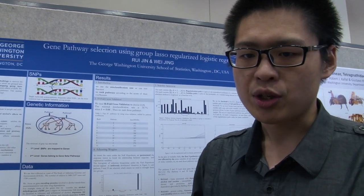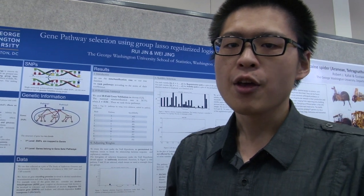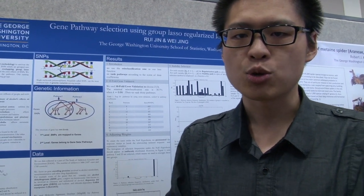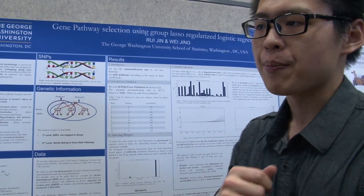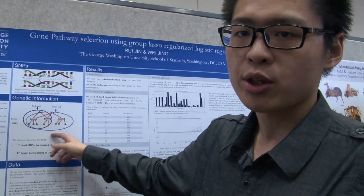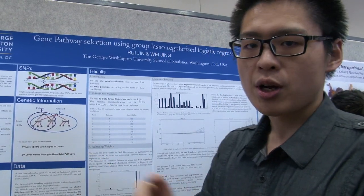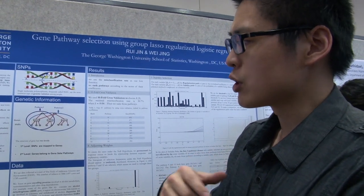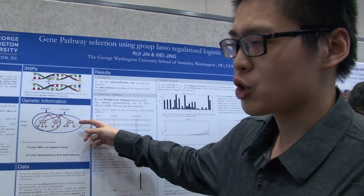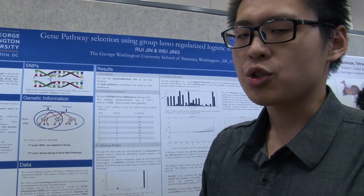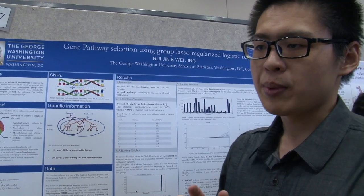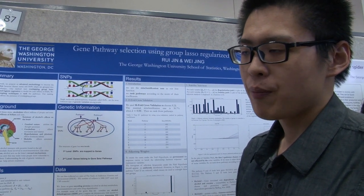As statisticians, we try to analyze the data. First, we need to have a better understanding of the structure of the data, so I want to introduce something about gene structure. Gene structure has two levels. The first level is between SNPs and genes. In this level, each SNP can only be mapped to one gene, which means no overlap happens at this level.